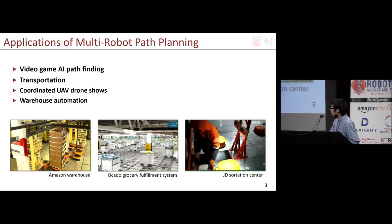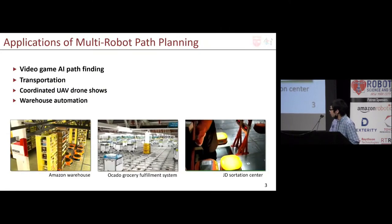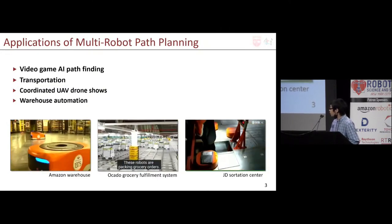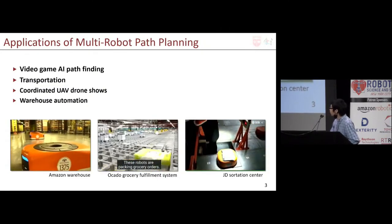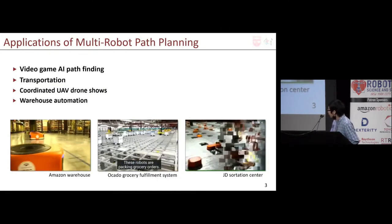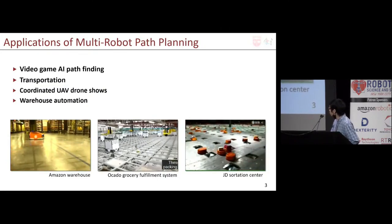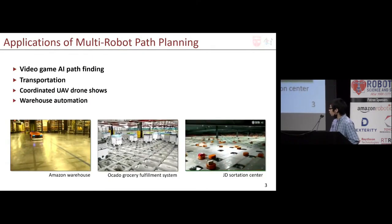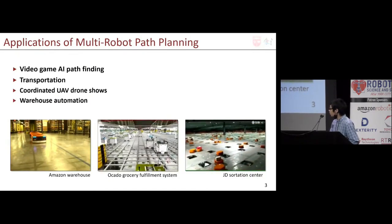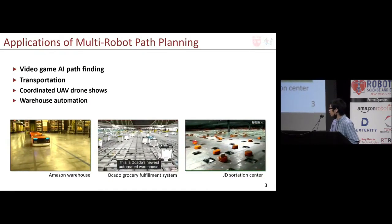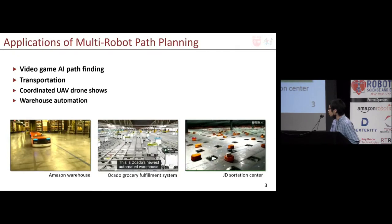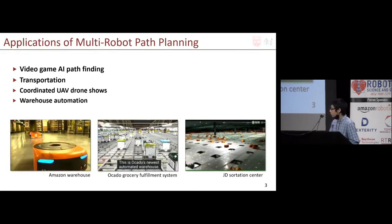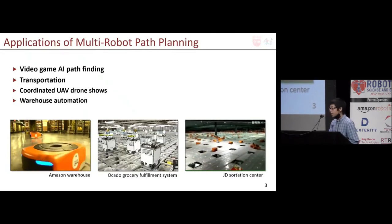Here are some warehouse-related applications where the underlying environment is grid-like. Amazon, Ocado, JD.com, and other express companies have deployed thousands of robots for fulfilling orders and sorting parcels. These robots essentially run on a grid-like setting.